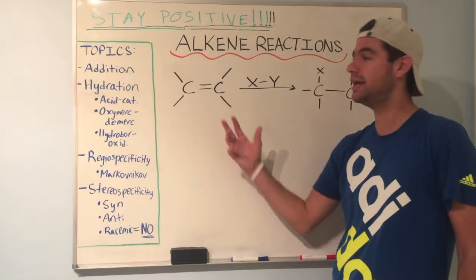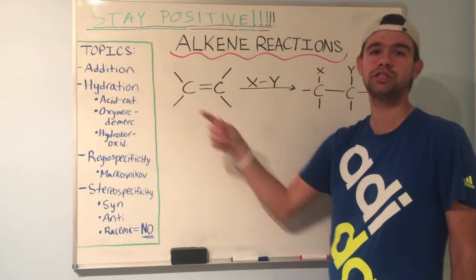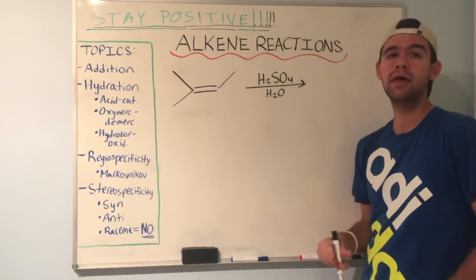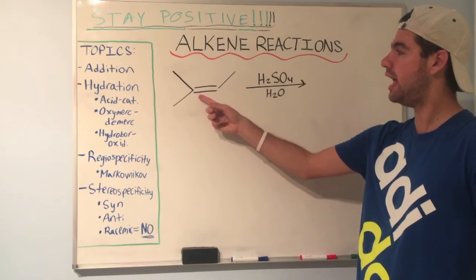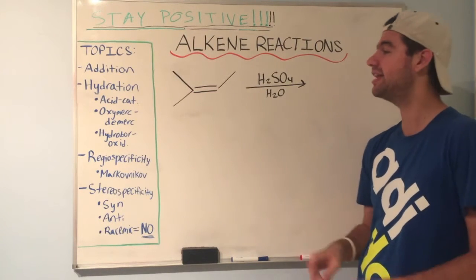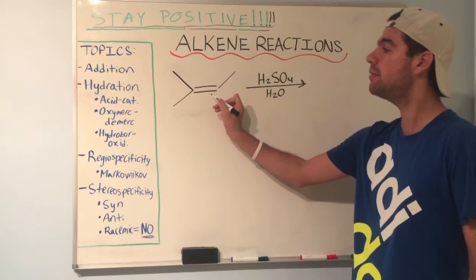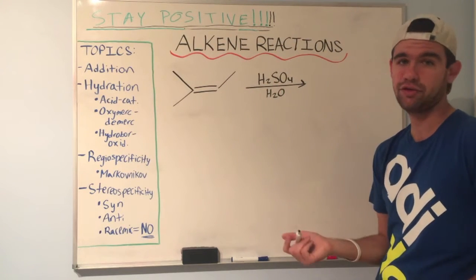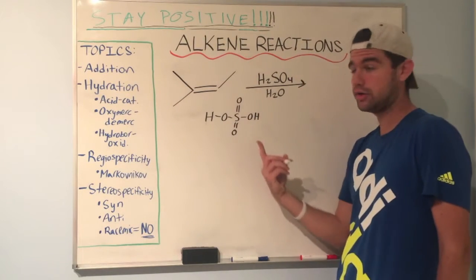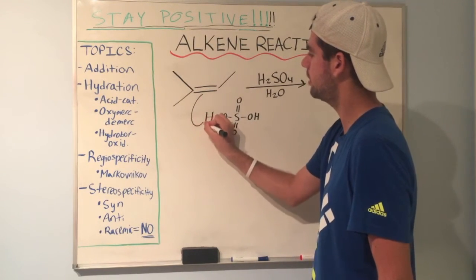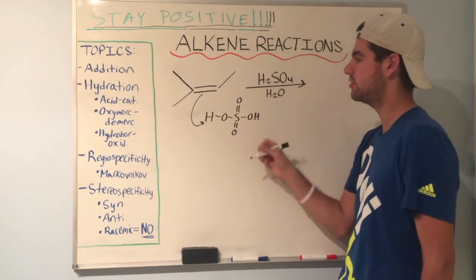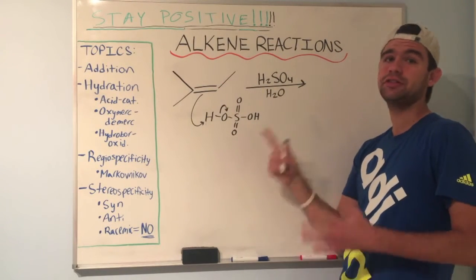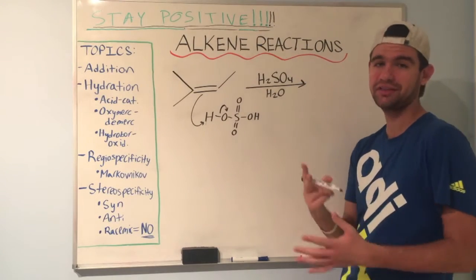Let's go right in talking about acid-catalyzed hydration of alkenes. Here we have an alkene in the presence of acid and water. What we don't normally think about is that an alkene can actually be nucleophilic — it's a source of electrons. So the pi bond, in the presence of acid, can act as a nucleophile, while the proton acts as an electrophile. I'm going to show you the mechanism first, then talk about it.